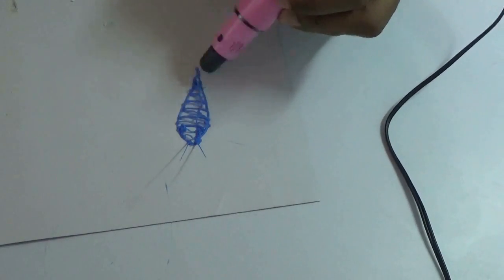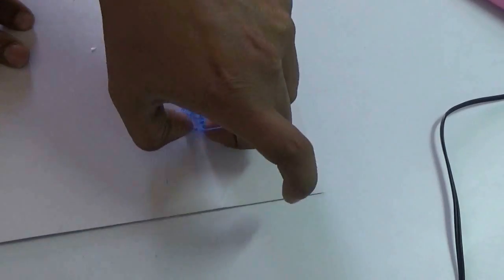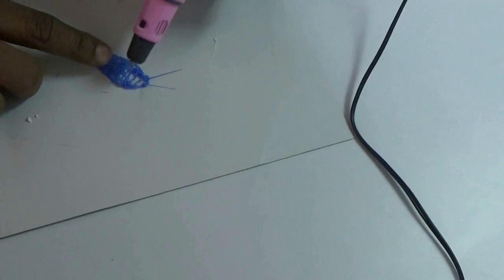Make some up and down lines also. Now take it out from the paper and you can put even more plastic to give it a different shape.